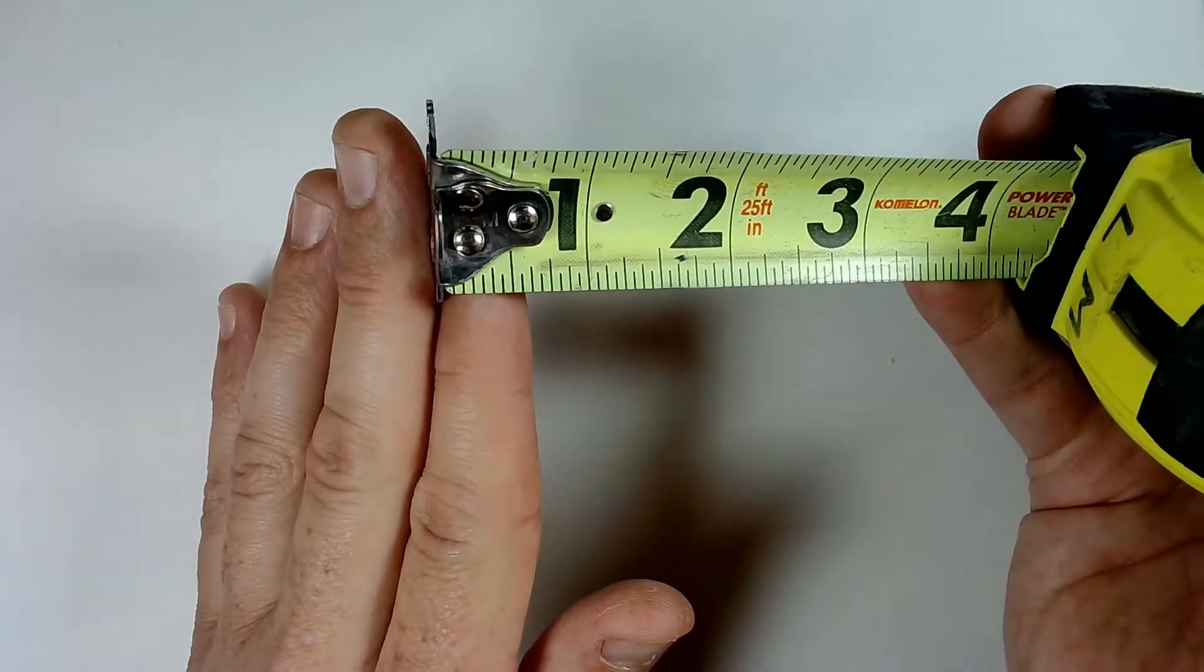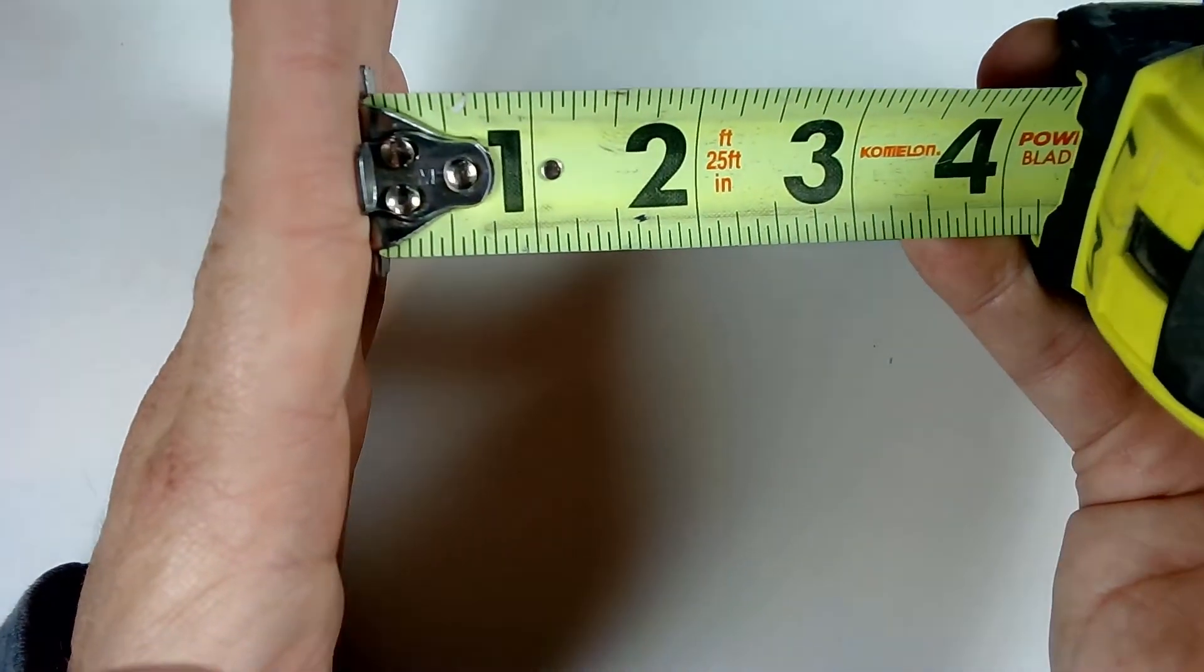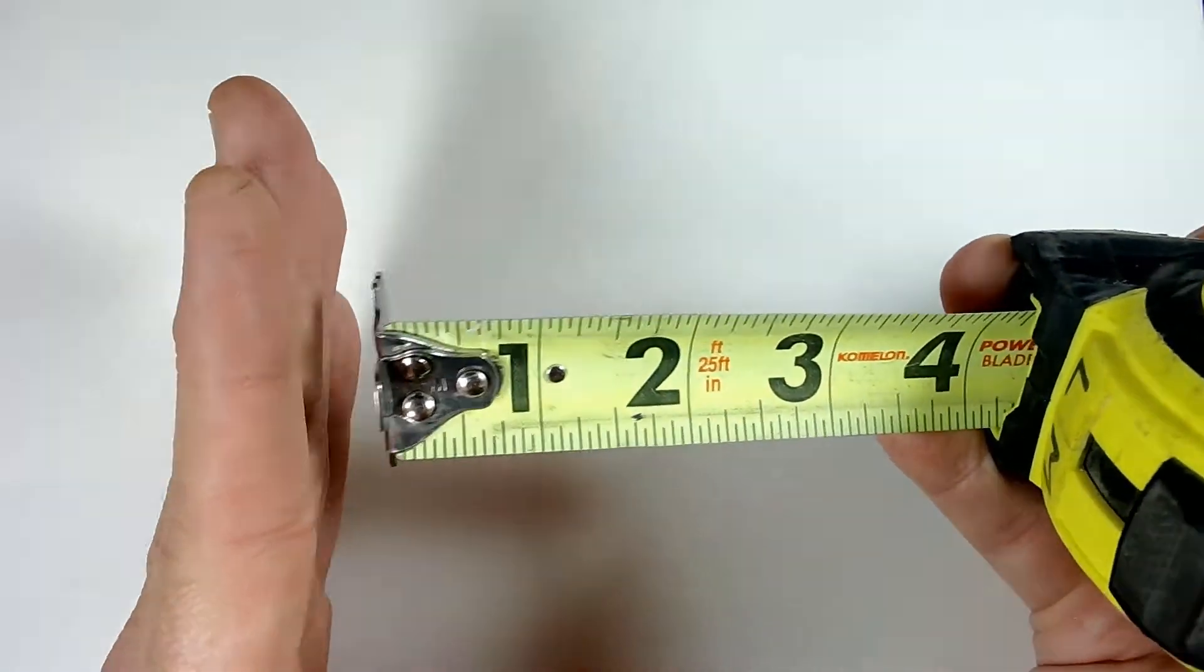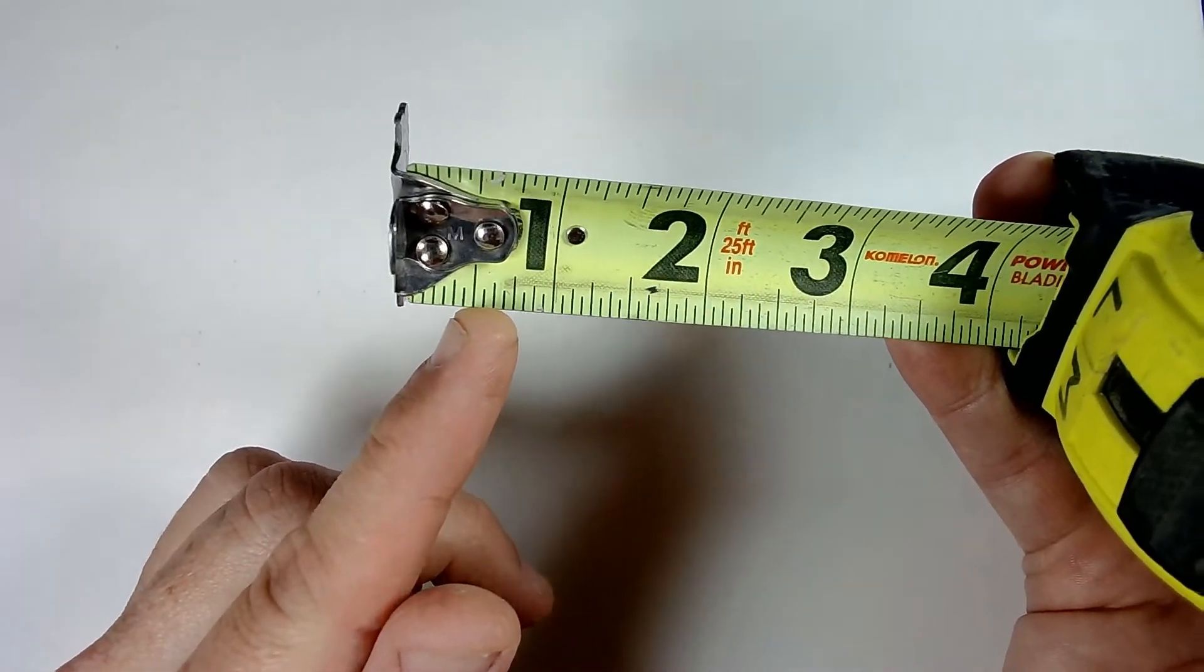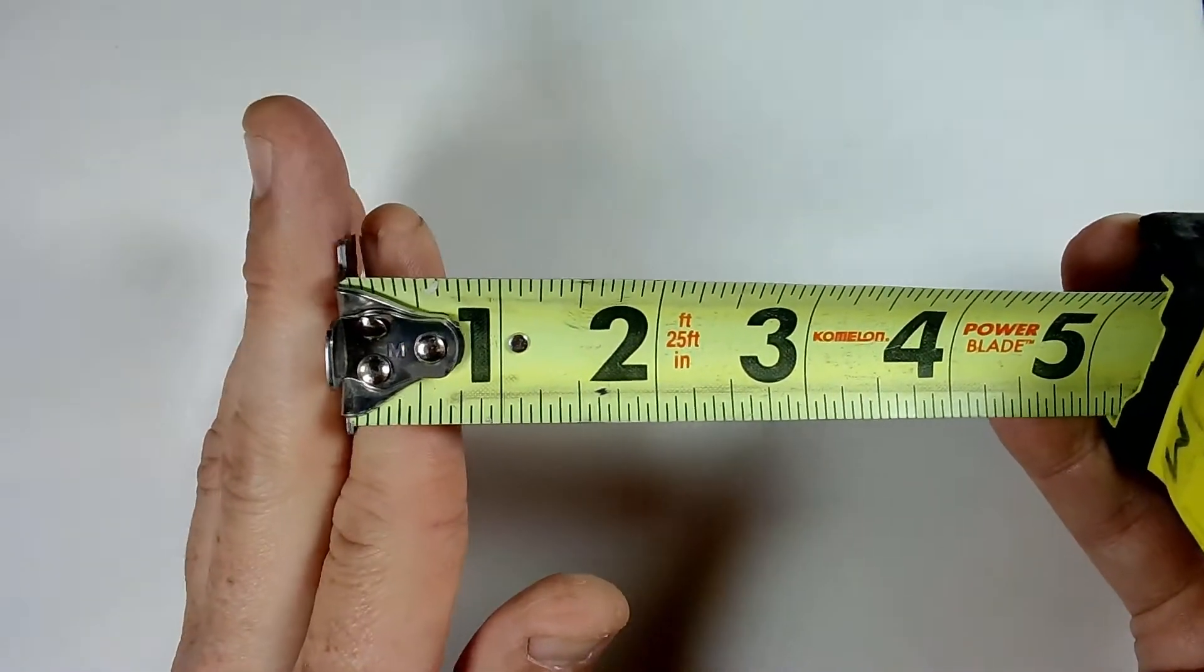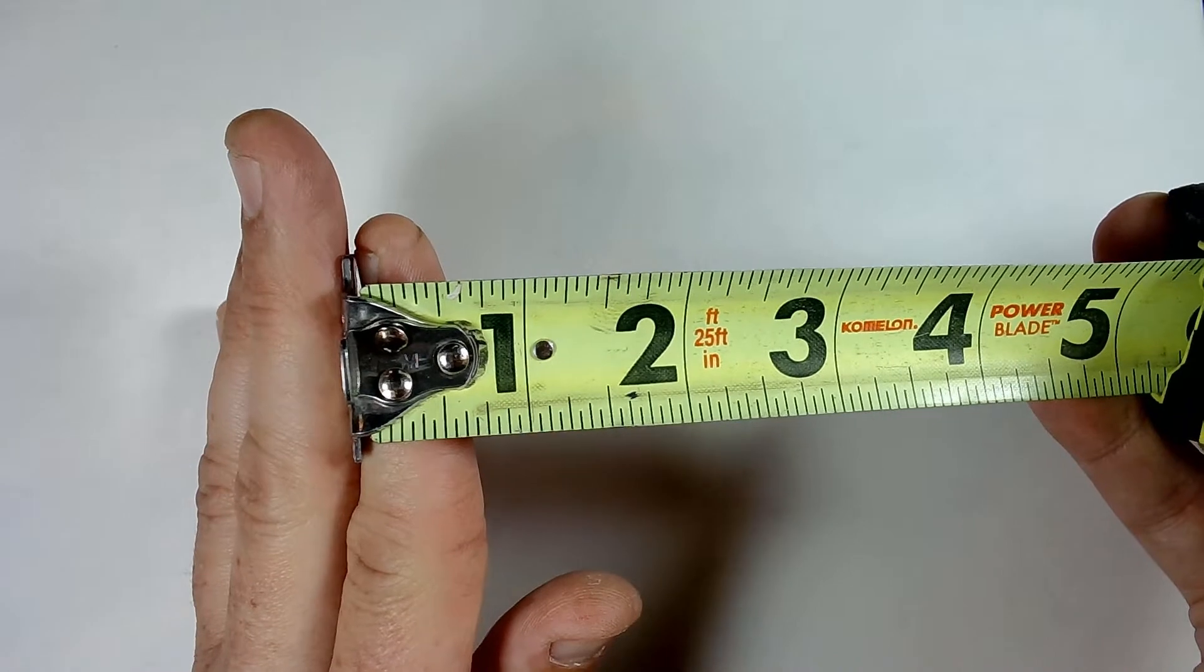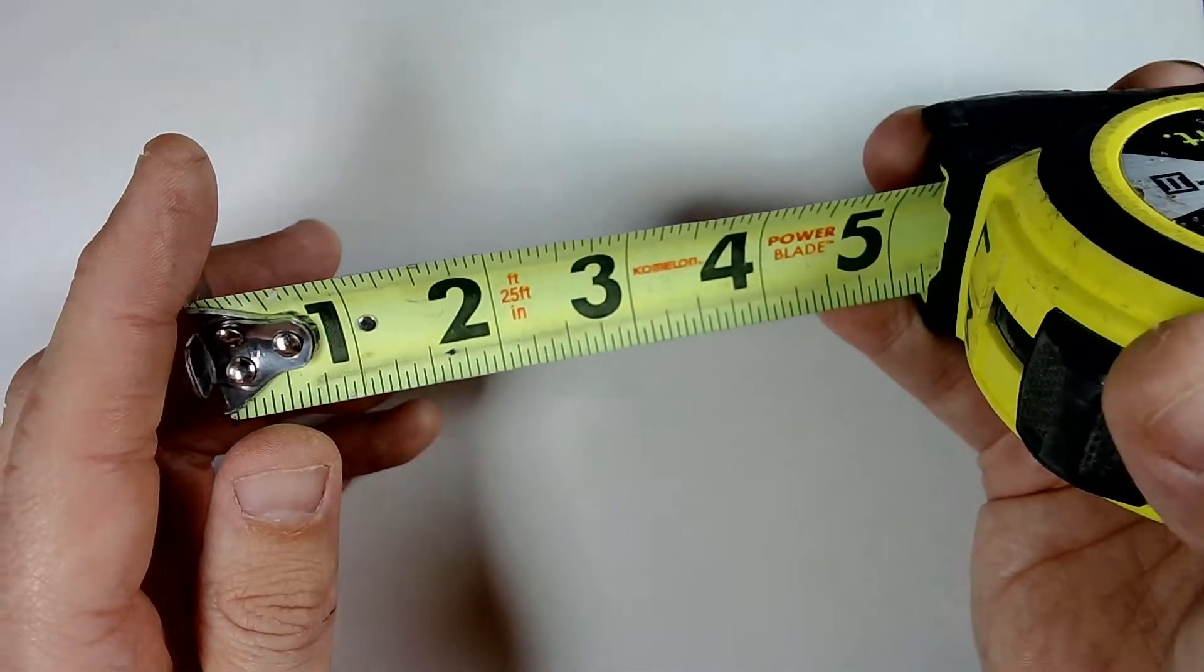The tips of these tape measures are movable on purpose. This is so if you're measuring against something, the tape portion that actually has the scale on it pushes a little closer to it. And if you're hooking on something and pulling it that way, it pulls it a little away from the surface to get an accurate measurement.